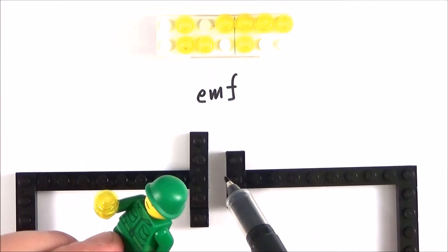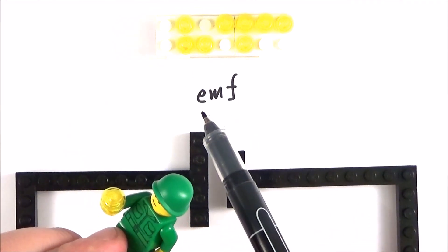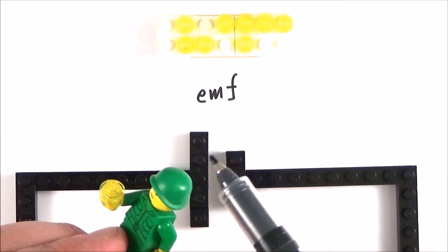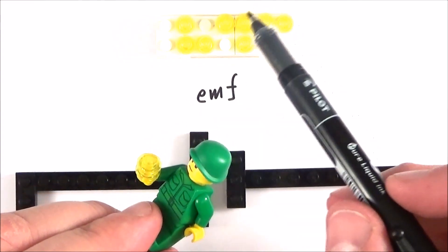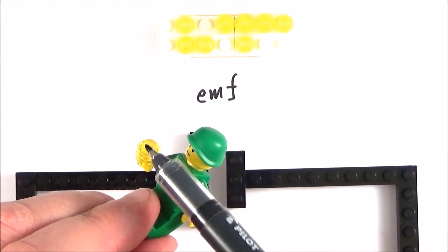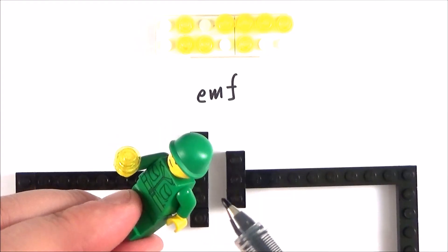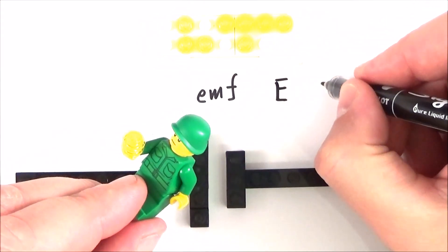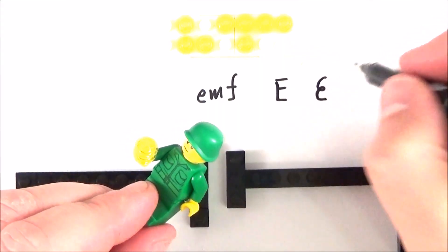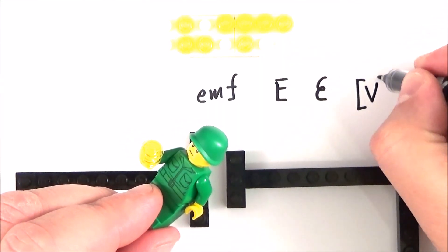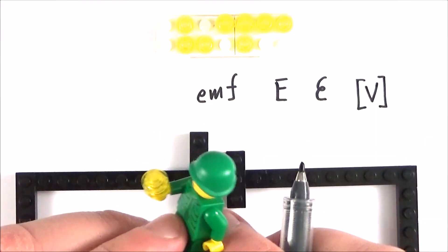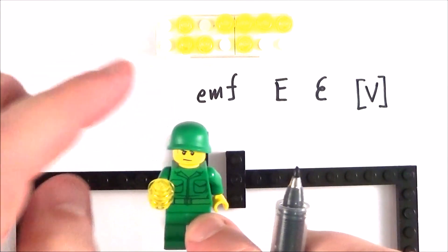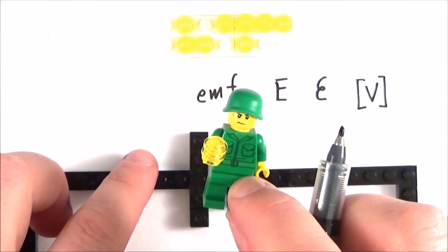What we have across the cell is an EMF — electromotive force — even though it's not actually a force. This is the amount of energy transferred from chemical energy into electrical energy per unit charge. This often has the symbol capital E, or sometimes a curly E or epsilon. The units for this are the volt. So EMF is the energy per unit charge transferred from chemical energy into electrical energy.